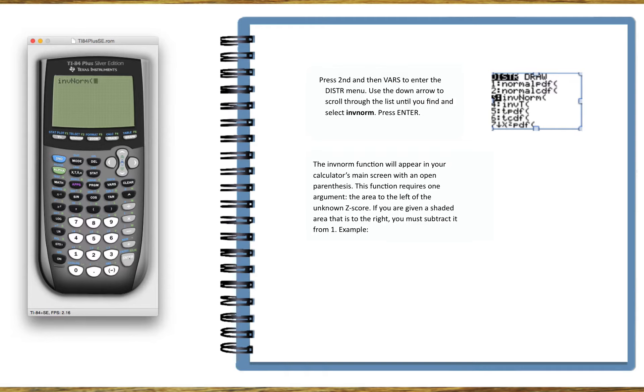Now the INFNORM function will appear with an open parenthesis and this function requires one argument and we're entering the area to the left of the unknown z-score.